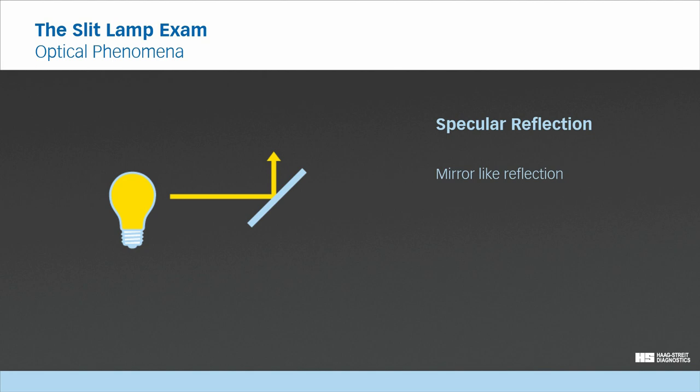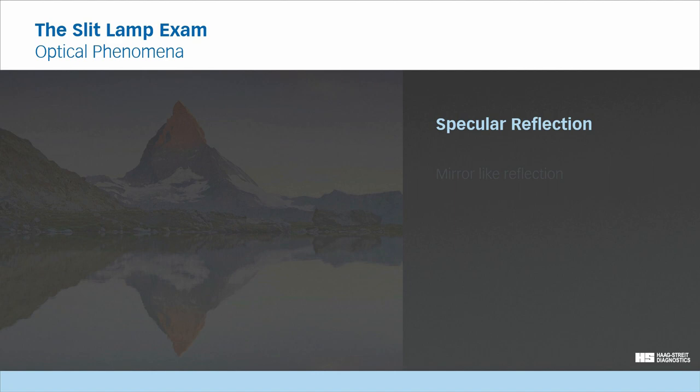Specular reflection. In specular reflection or mirror-like reflection, the incident light is reflected into a single outgoing direction. This can be observed when a landscape is reflected in a lake which has a smooth surface.